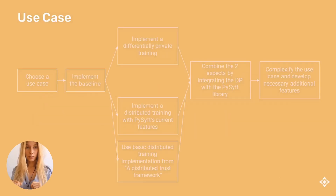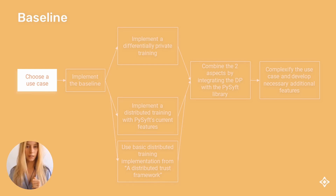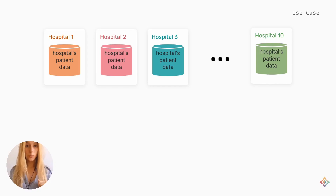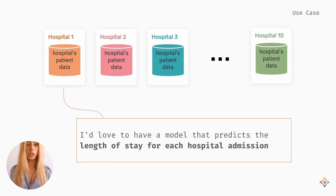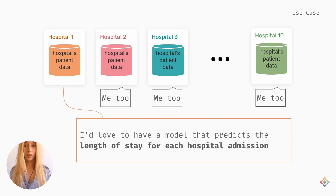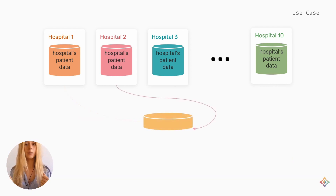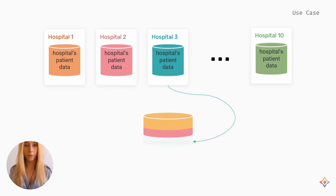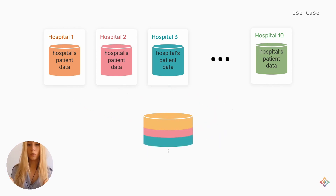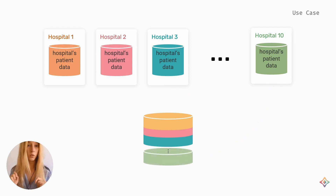For this proof of concept, we chose a use case that can be stated as follows: a hospital would like to estimate the length of stay for each new patient admission. About 10 hospitals have the intuition that data from previous hospitalisations could be used to develop a model to predict length of stay, especially if the model could learn from data across all these hospitals.